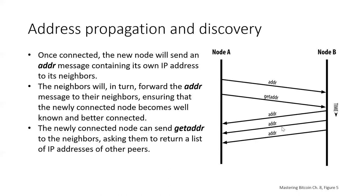Once one or more connections are established, the new node will send an address message containing its own IP address to its neighbors. The neighbors will in turn forward the address message to their neighbors, ensuring that the newly connected node becomes well known and better connected. Additionally, the new connected node could send a get address message to the neighbors asking them to return a list of IP addresses of other peers. Here we can see node A sending its address to node B, then node A sends get address to node B, and node B sends back some of the addresses it knows about.